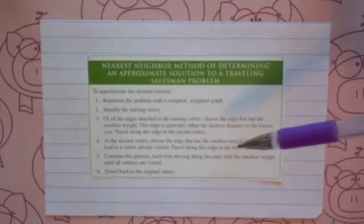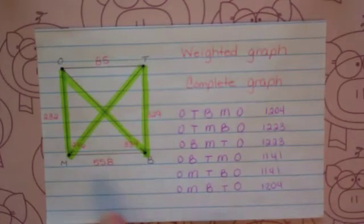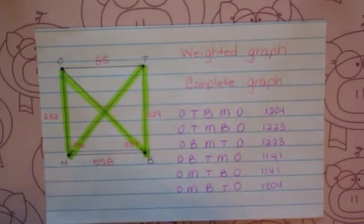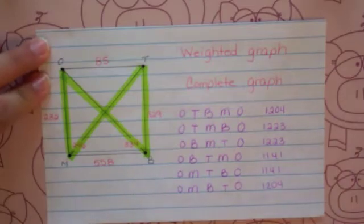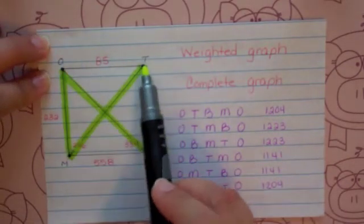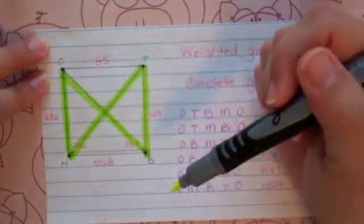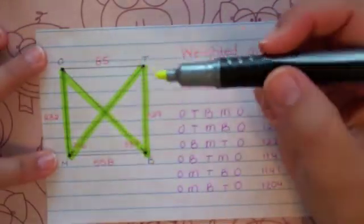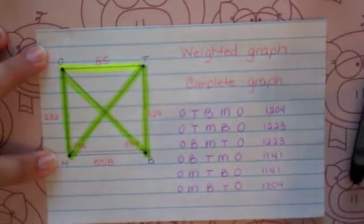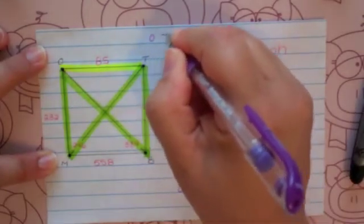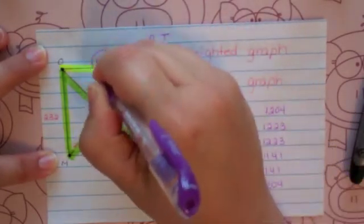Let's try the nearest neighbor method on our Orlando problem. He was starting in Orlando, so let's look at the three edges coming out from Orlando: 85, 334, and 232. The smallest one is 85, so I'm going to choose that one. I'm going to go from Orlando to Tampa for 85.